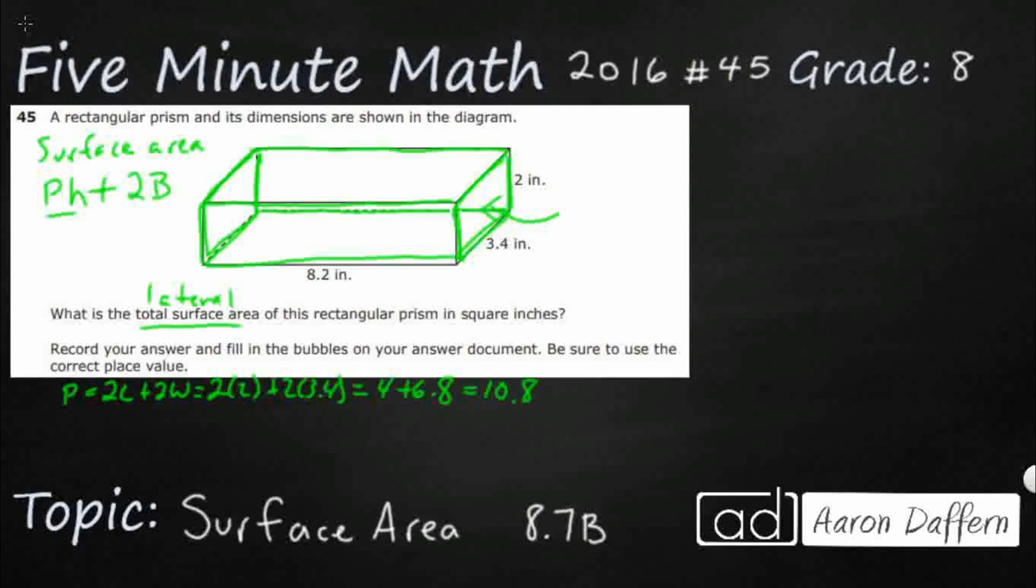Now we multiply this perimeter times the height, simply because each of these four sides connects with one of our rectangular faces. If you multiply each of those four sides, which is represented in that perimeter, by the height, you would actually get the area of each of these four faces.